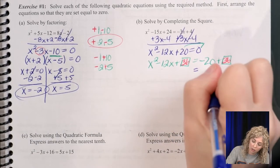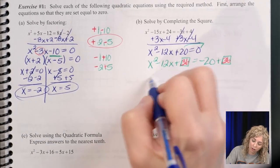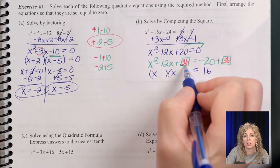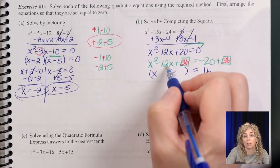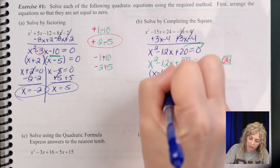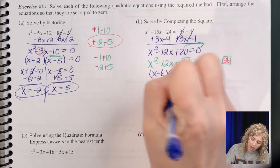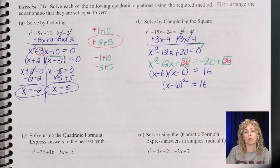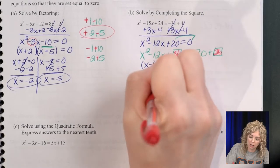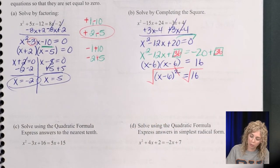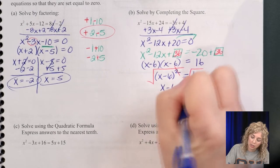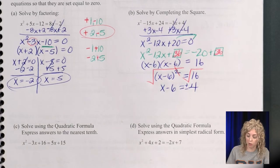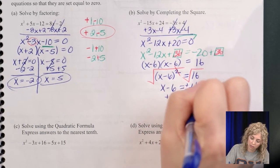So on the right side, we get 16. The left side, when we factor, no GCF, xx. What multiplies to 36 adds to a negative 12. And remember, it must be the same number as negative 6, negative 6. We rewrite it as x minus 6 squared equals 16. So then we can solve by taking the square root. So we end up with x minus 6 equals plus or minus 4.